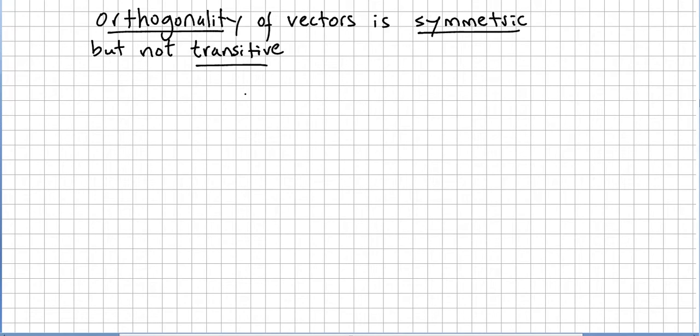So two vectors, they are symmetric. I can use some intuition here. We have vector u and vector v. If u is orthogonal or perpendicular to v, v is orthogonal or perpendicular to u. So this relation will be symmetric.